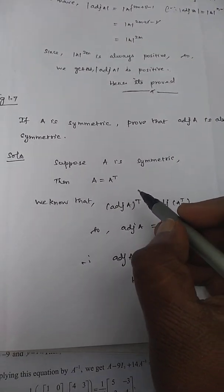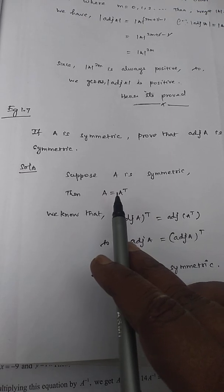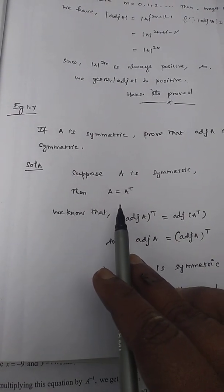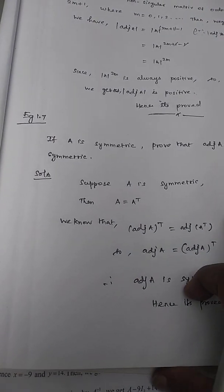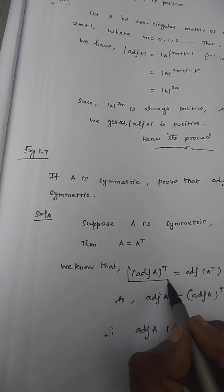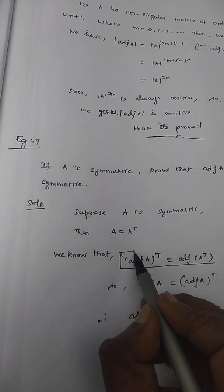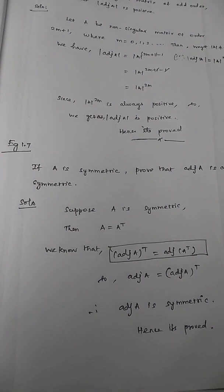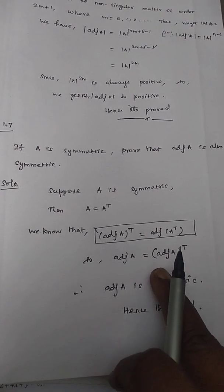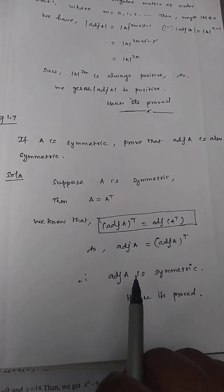If A is symmetric, then A is equal to A transpose. Now we know that adjoint(A) whole transpose equals adjoint of A transpose. So adjoint(A) equals adjoint(A) whole transpose. Therefore, adjoint A is symmetric.